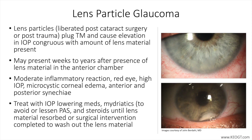You can see here from the two photographs on this slide fluffy cortical material in the angle. If you were to look with gonioscopy, you would see additional material in the angle. Gonioscopy is necessary when you have this clinical picture to quantify the extent of lens material in the angle. This is more of a cortical chip with some surrounding cortex, which is another presentation, and you're sure to find more cortical material in the angle on either side.